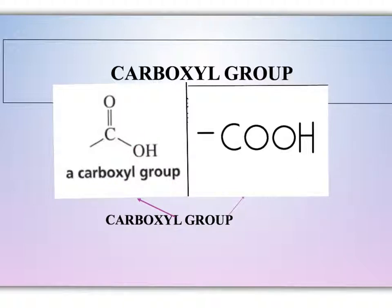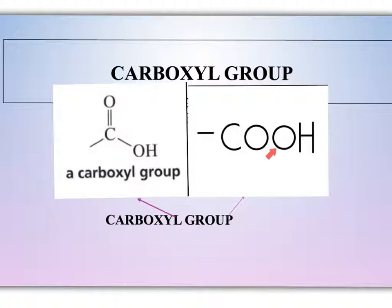The two typical ways that carboxyl groups are drawn in organic acids: one shows the carbon double bonded to the oxygen attached to the OH with the continuing carbon chain extending out. Or it can be condensed and written as COOH, where the carbon is double bonded to the oxygen and the OH is shown separately, with the chain continuing out.